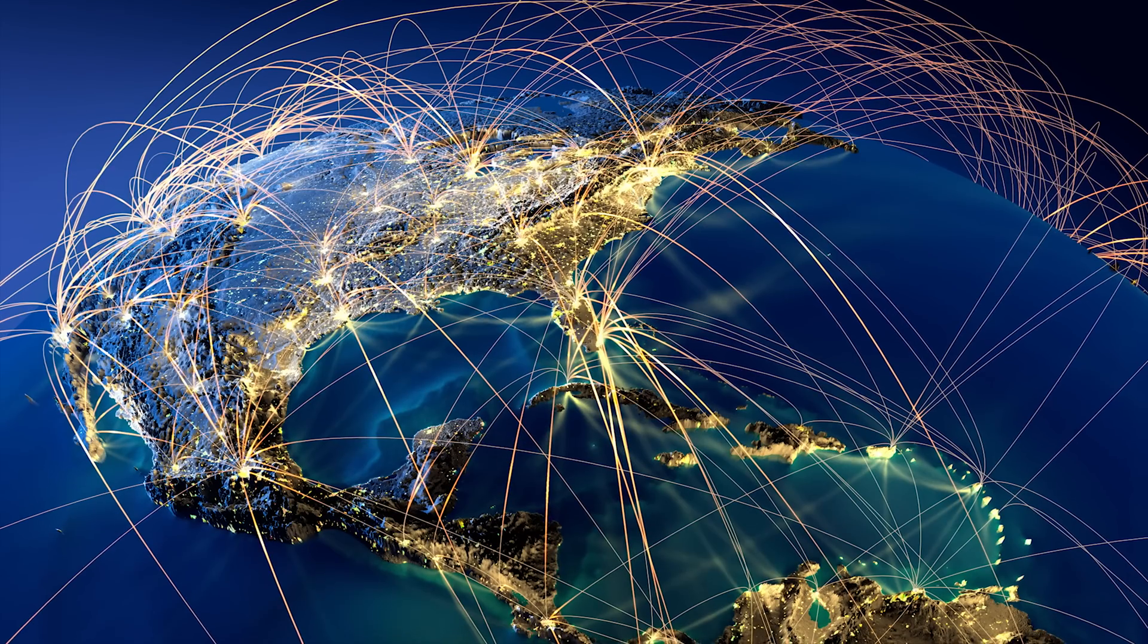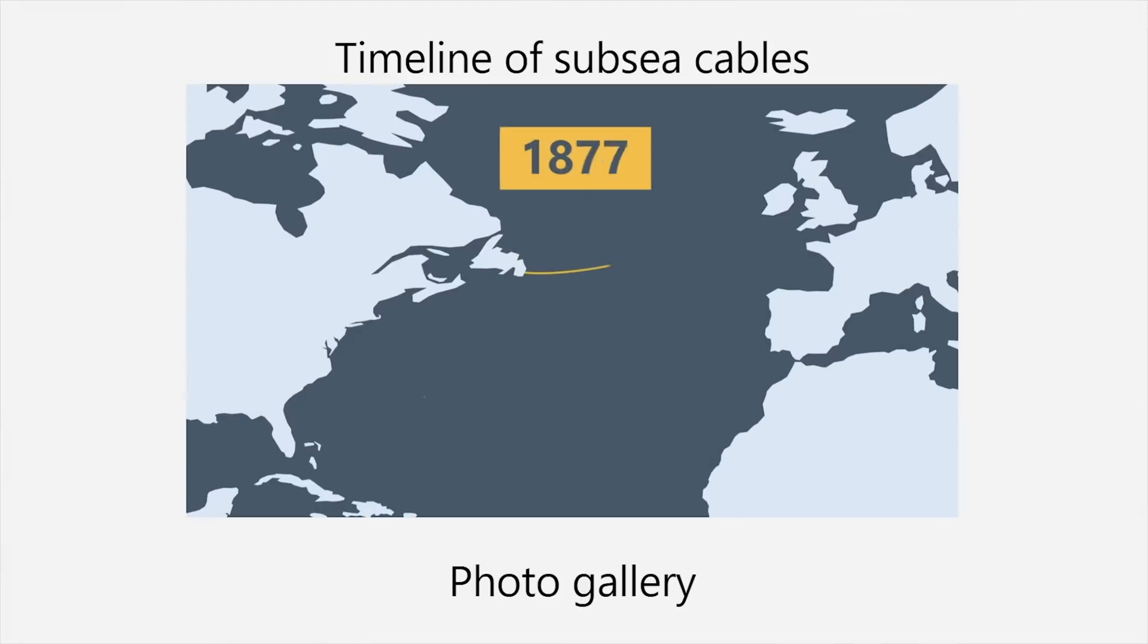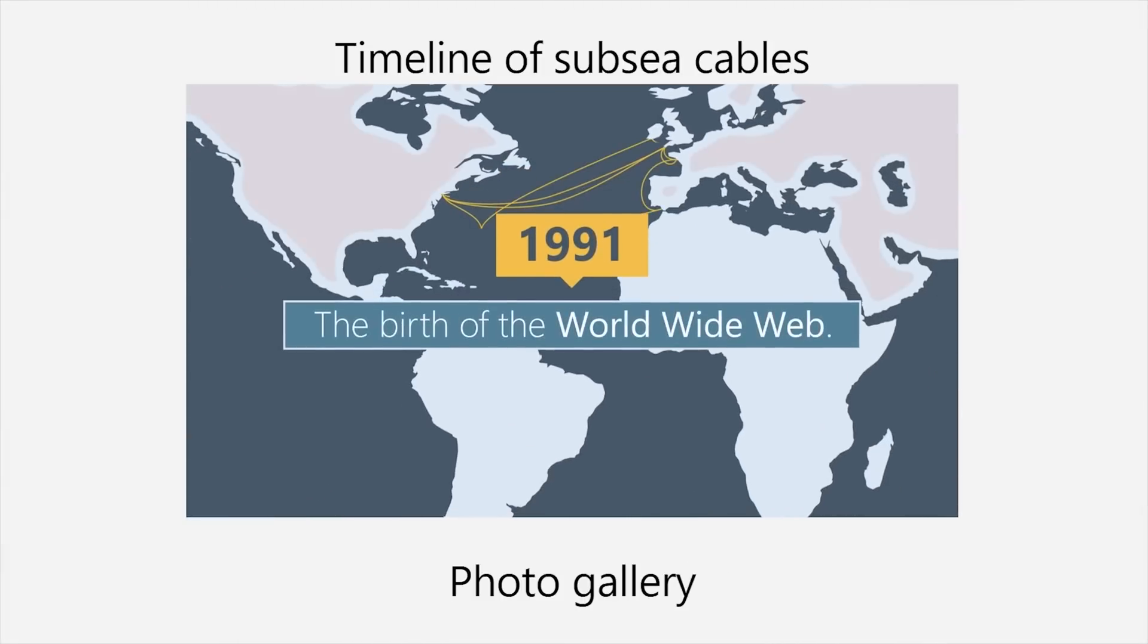The internet backbone that forms the main highways for the world's data. Although there are plenty of routes that boast speeds of 100 gigabits per second or even higher, that is actually child's play compared to the most advanced infrastructure in the system. As of the time we shot this video, the fastest portion of the internet backbone is an undersea cable called Marea, stretching from Virginia Beach to Bilbao.